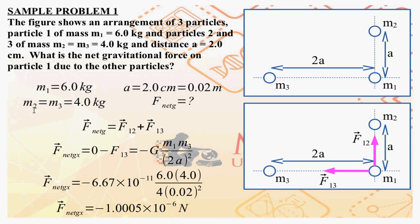So m1 is 6 kilograms, m2 equals m3 equals 4 kilograms, and a equals 2 centimeters — convert to meters. We are asked to get the net gravitational force experienced by m1. All our particles have masses, so they will interact with each other; simply because they have masses, they will attract each other.